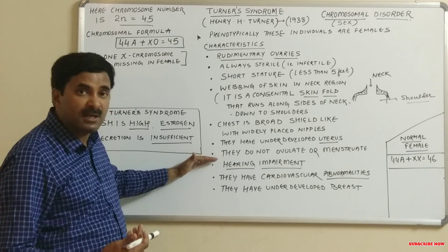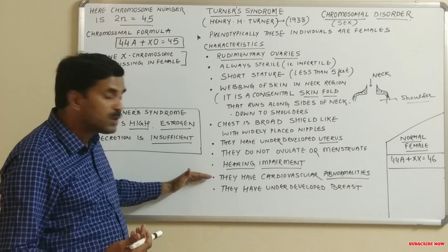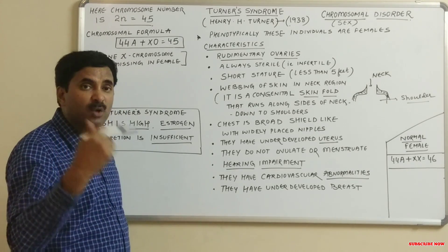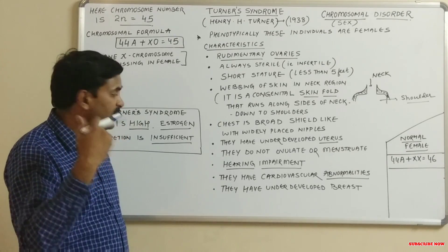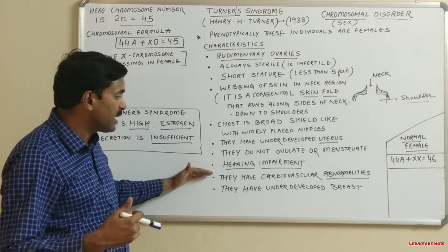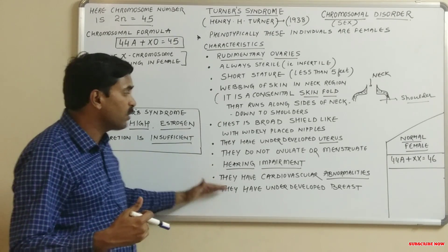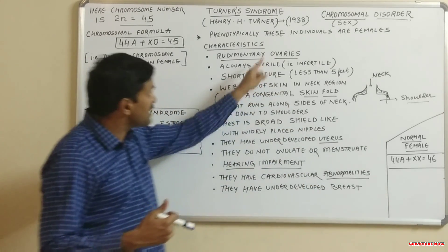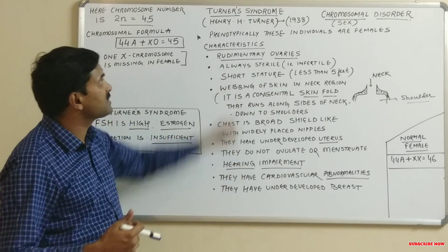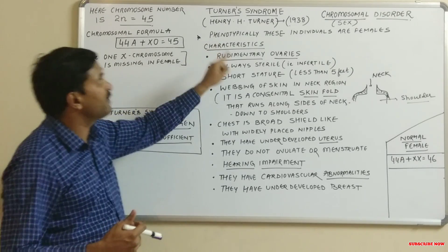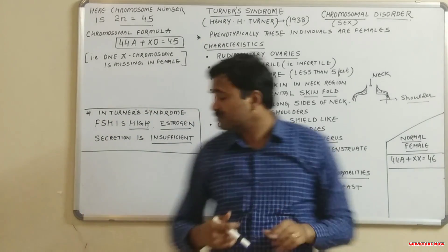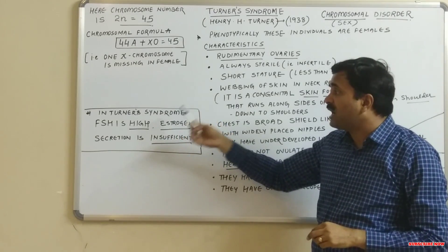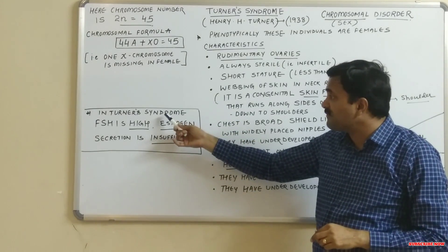Additional abnormalities in Turner syndrome females include hearing impairment, cardiovascular abnormalities (related to the heart), and underdeveloped breasts. These are the chief characteristics of a female suffering from Turner syndrome.